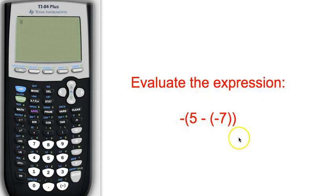So negative quantity 5 minus negative 7. Note the use of parentheses around the negative 7. These parentheses are not to denote that there is any operation that should occur here first, but rather to simply show that the negative sign preceding the 7 should be grouped with the 7.